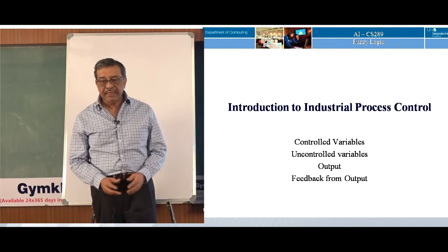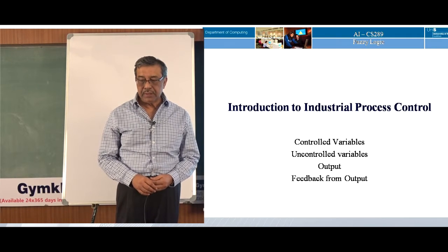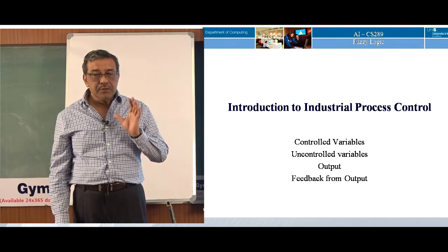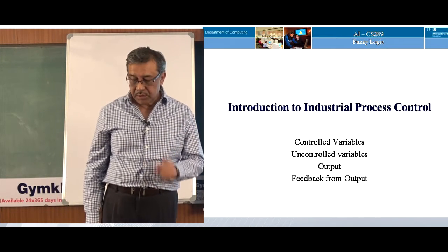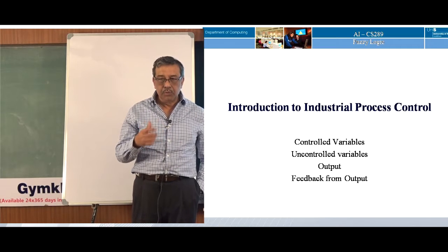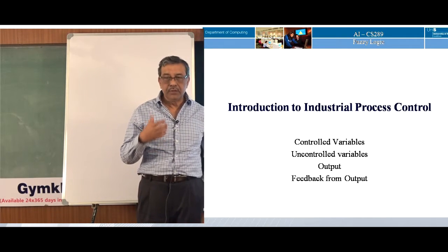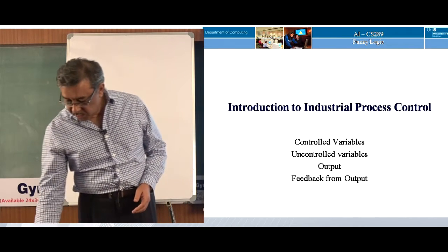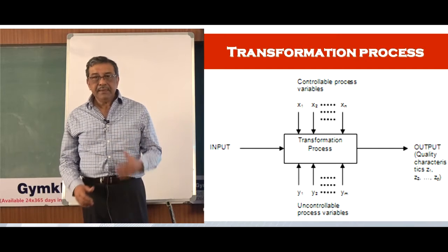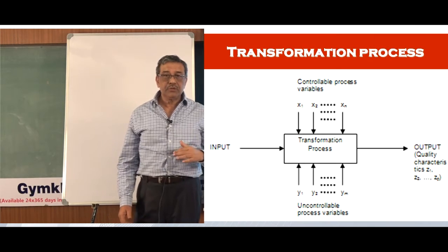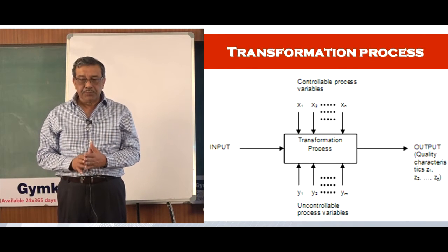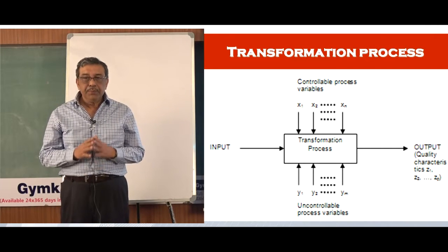First of all, just to give you an idea of what we mean by process control and what we are trying exactly to control. We want to define certain things: there are variables known as controlled variables, there are uncontrolled variables, and finally the output. Normally there is a feedback taken from the output side to come to the values of control variables. In this slide, you can see there is an input, a process, control variables, uncontrolled variables, and finally the output. This is a general description of a process.